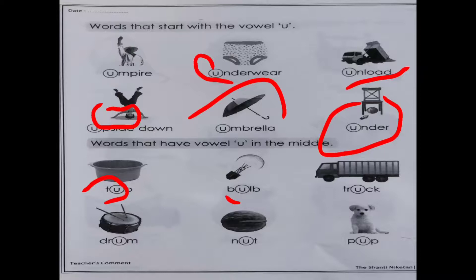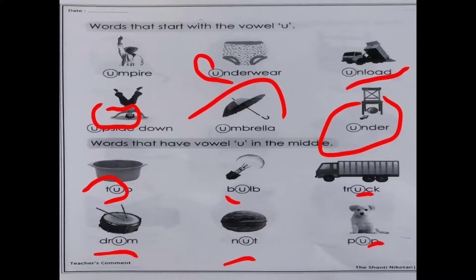Next picture - tr, u, k - truck. Next - dr, u, m - drum. Next - n, u, t - nut. And the last picture is of p, u, p - pup.